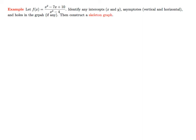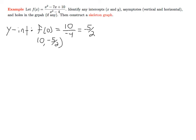The first thing we can take a look at is the y-intercept. To find the y-intercept, we set x equals 0 and evaluate f at 0. In the numerator, we get 0 minus 0 plus 10, so we have 10. In the denominator, we have 0 minus 4, that gives us minus 4. So we have a y-intercept at (0, minus 5 halves), and I'll mark this point on the graph.